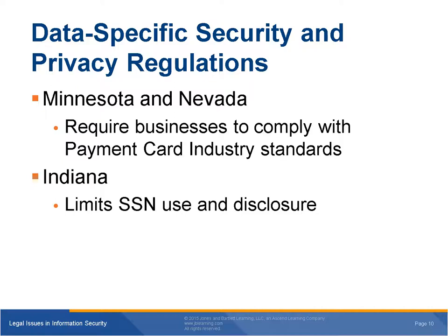The Nevada law applies to data collectors — state agencies, financial institutions, and businesses that handle personal information. Some states have created laws protecting social security numbers. These laws recognize that social security numbers are highly sensitive pieces of information. A social security number can be very valuable to identity thieves, who can use the number to easily establish new identities and commit identity theft crimes. Indiana has laws designed to protect social security numbers. Its laws forbid social security numbers from appearing in public documents, and forbid state agencies from disclosing a person's social security number to any other person or entity.